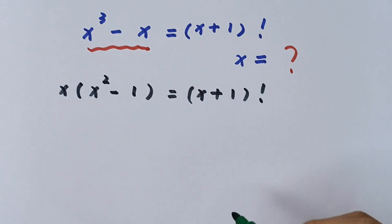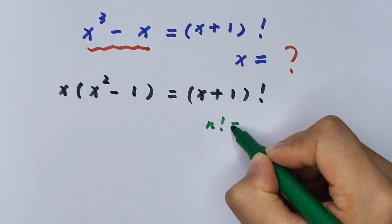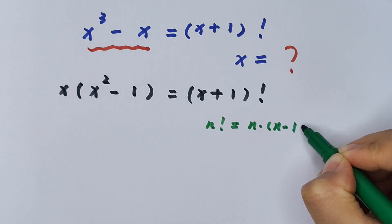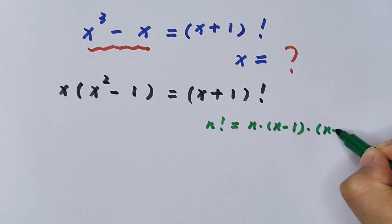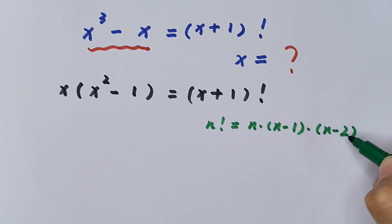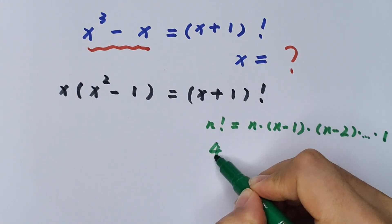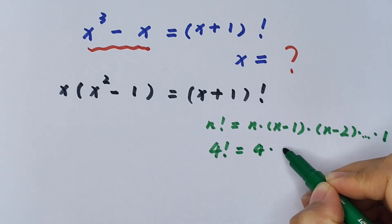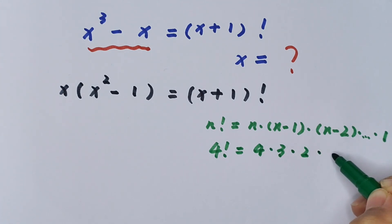The factorial formula is: n! = n × (n-1) × (n-2) × ... × 1. For example, 4! = 4 × 3 × 2 × 1.